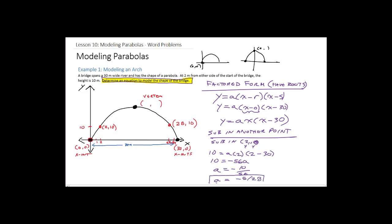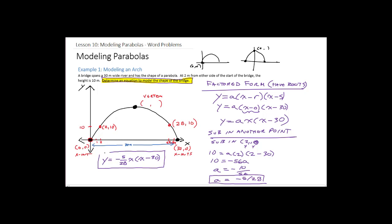So our equation is y = (−5/28) · x(x − 30). We substituted into the factored form equation we had, figured out what 'a' was, and that's our equation. That's the secret to solving all these word problems. After that we can answer all kinds of questions — every question gives you enough information to find the equation, and once you have it, you can go back and answer whatever's asked.